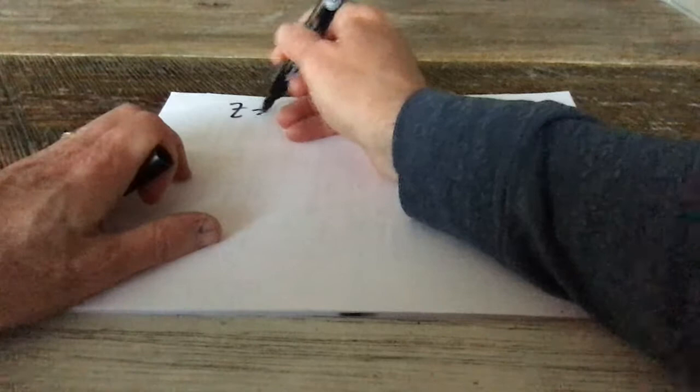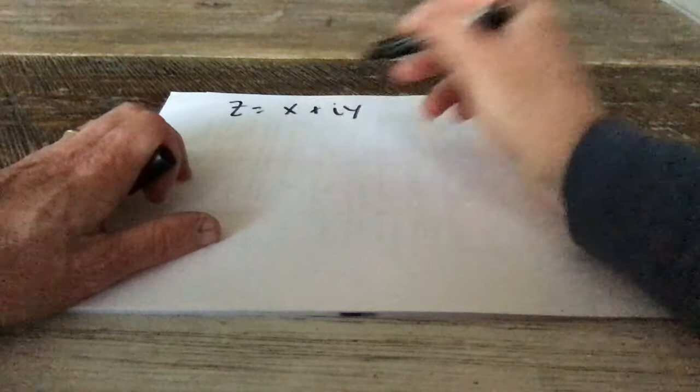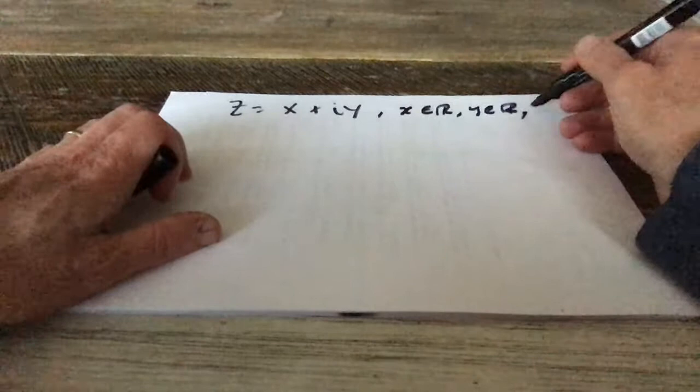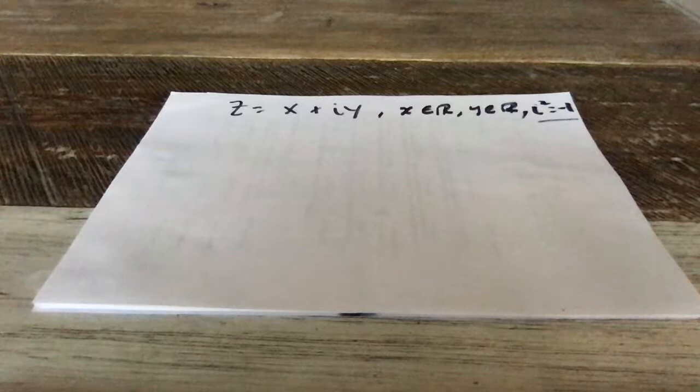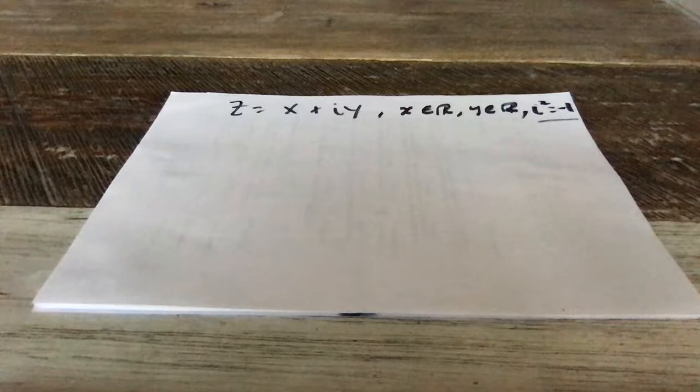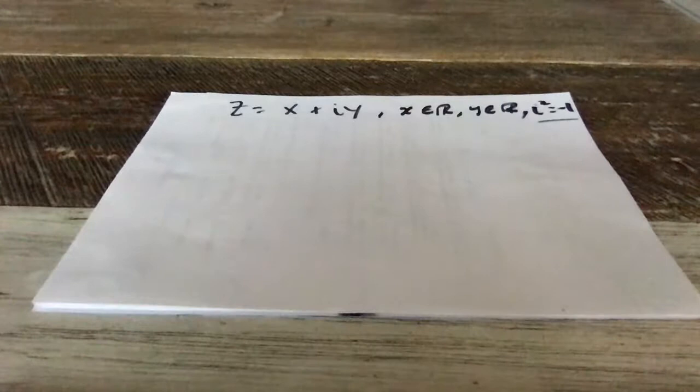And usually complex numbers are written as z. A complex number, then, is z is equal to x plus iy. Where x is a real number, y is a real number. And i is a square root of minus 1, or i squared is equal to minus 1. That's probably more useful, actually, because you see i squared cropping up a lot. So every complex number can be written like that. z is equal to x plus iy.